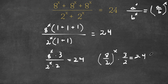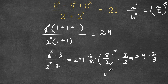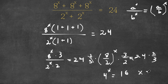Now to get rid of this 3 over 2, we have to multiply both sides by 2 over 3. So then these two cancel out, and we are left with 8 over 2 which is 4. So 4 to the power of x is equal to 24 times 2 over 3. 24 times 2 is 48, and 48 divided by 3 is 16. So we have 4 to the power of x is equal to 16, meaning x is equal to 2. So this is our answer.